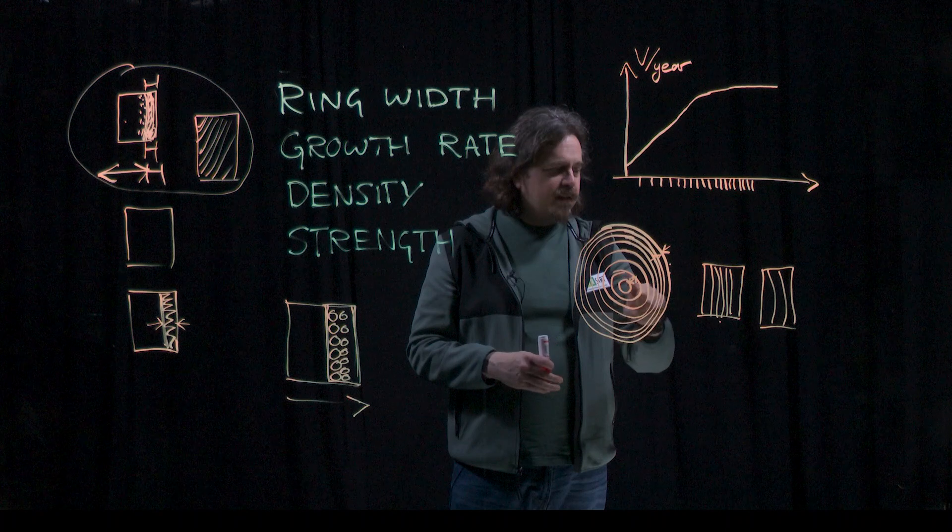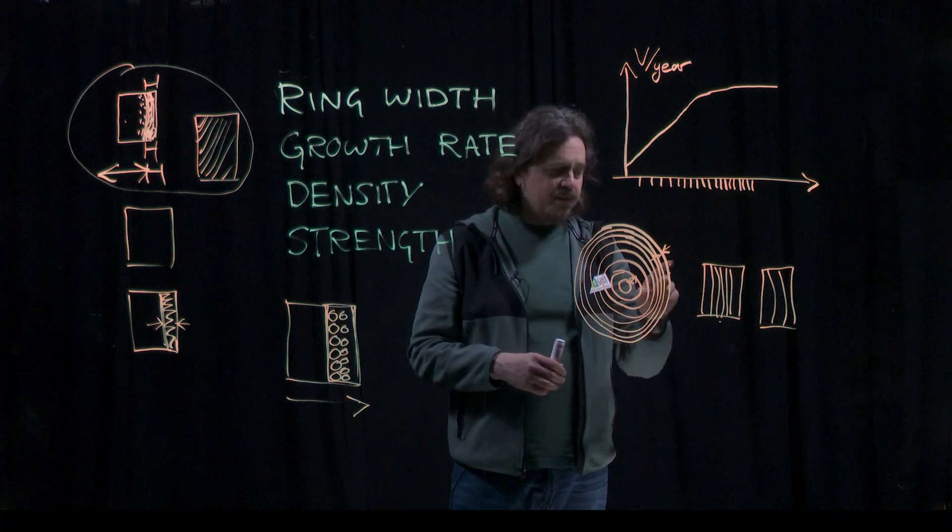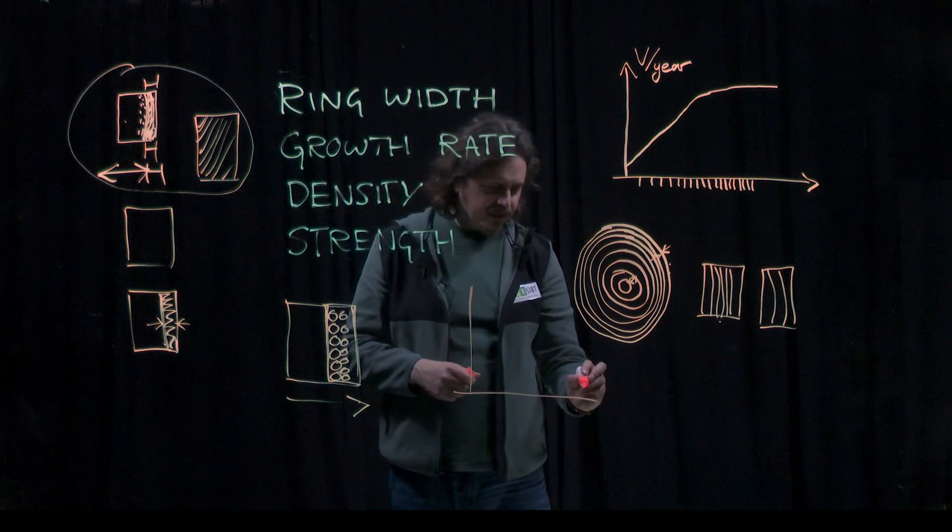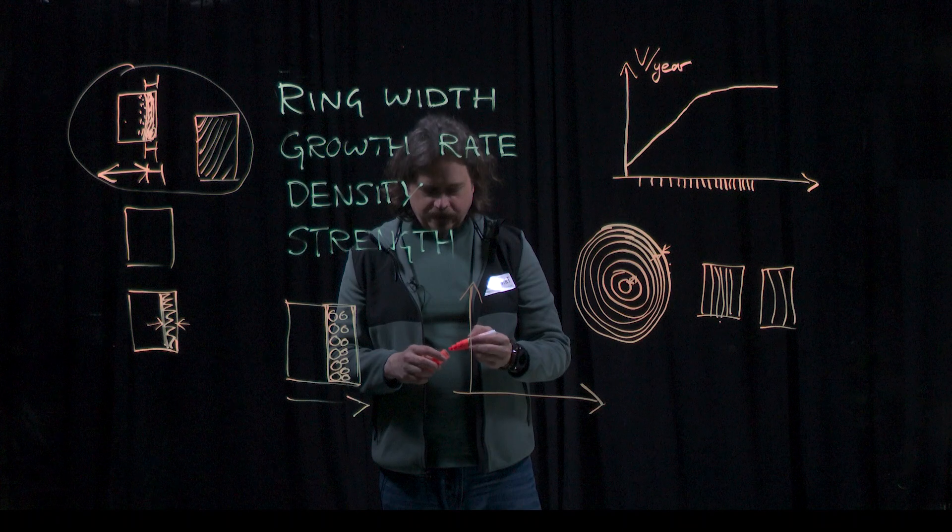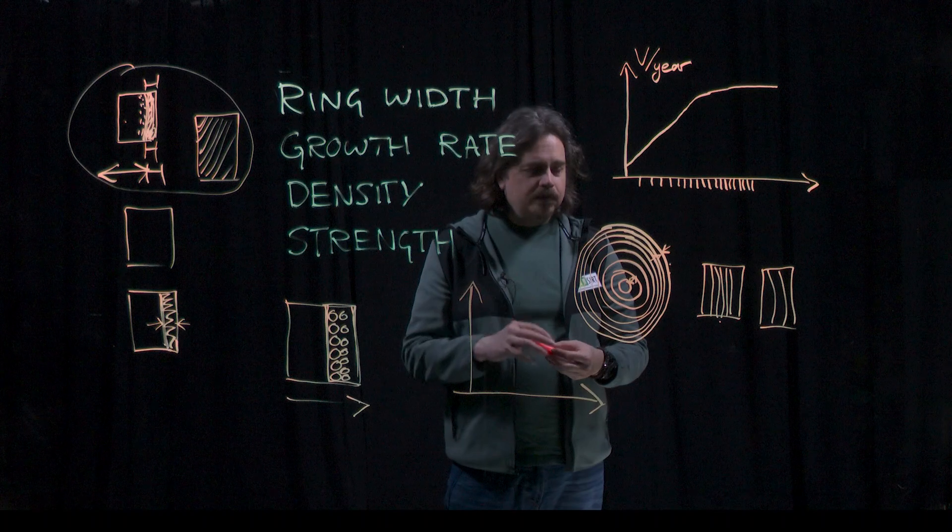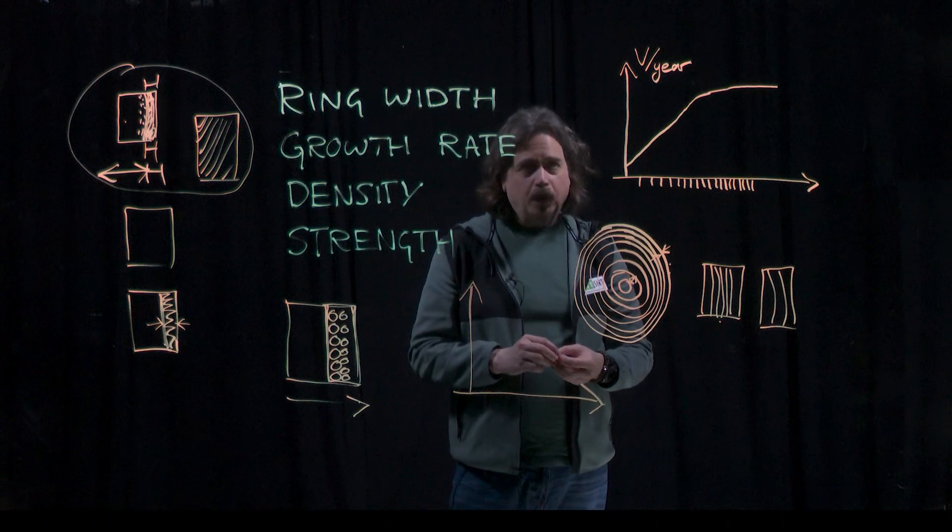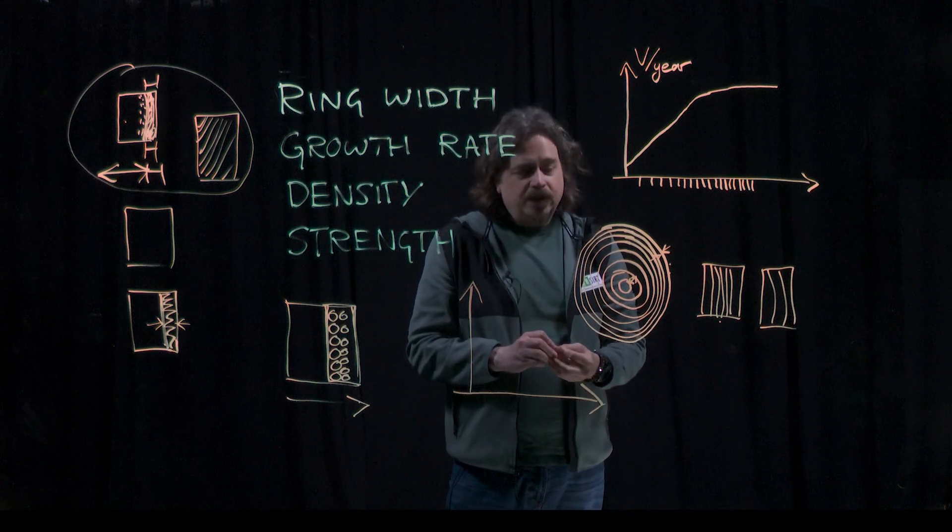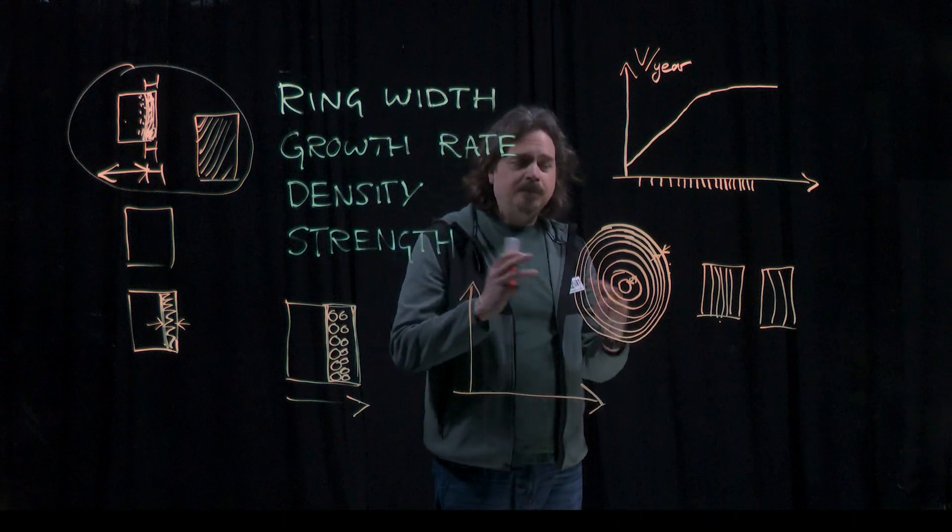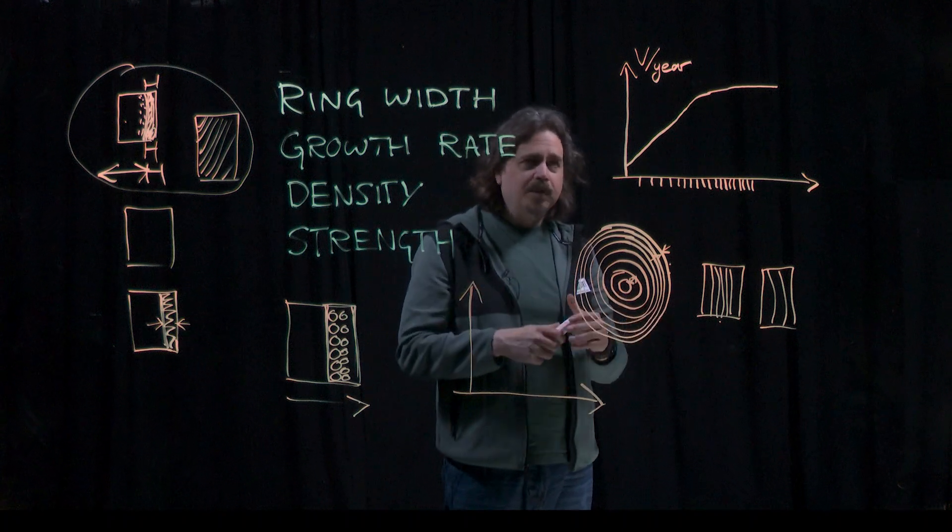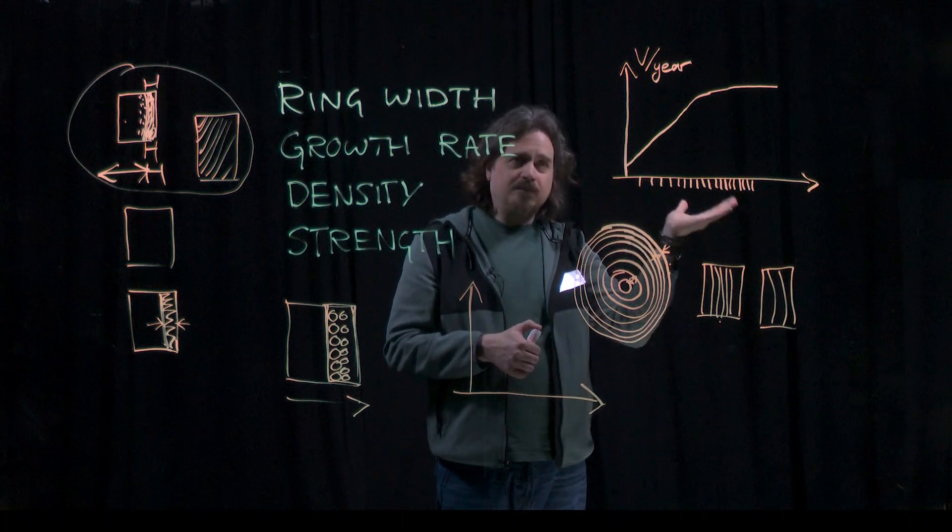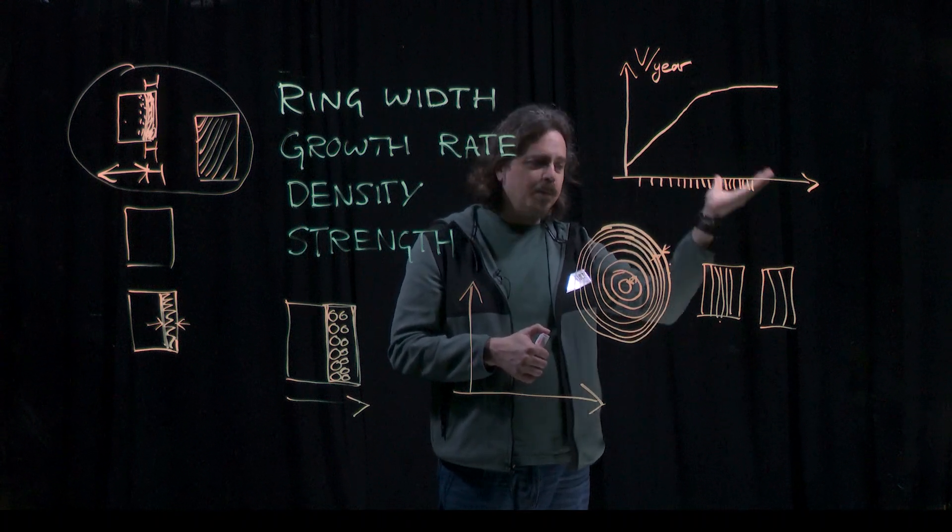So why does softwood have this radial trend in wood properties? There's a theory that it's to do with the changing biomechanical needs of the tree. So when a tree is young, it's relatively small, and its strategy for shedding wind load and snow load is simply to move out of the way. So it likes to have nice flexible wood, because that flexibility allows it to sway and let the snow fall off or the wind blow to the side.